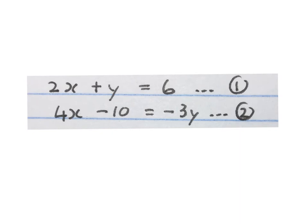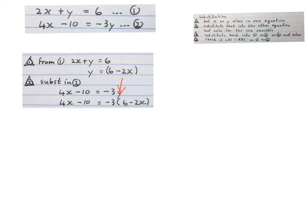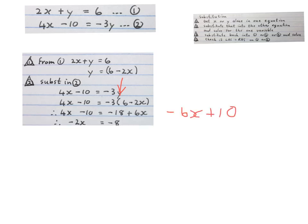This is our third and last simultaneous equation. They gave us two equations, already numbered. Firstly, get X or Y alone in any of the equations. I worked on equation one: minus two X on both sides gives Y equals six minus two X. Now substitute this back into the Y of the other equation — equation two — replacing Y with six minus two X in brackets and solving for X. Simplifying both sides, then minus six X on both sides and plus ten to both sides gives minus two X equals minus eight, so dividing by minus two gives X equals four.